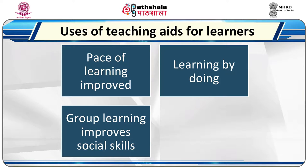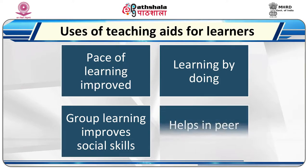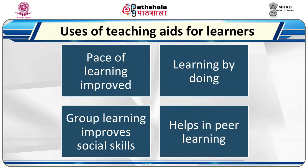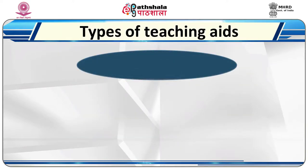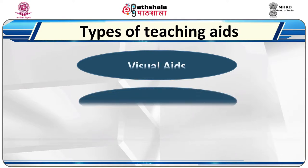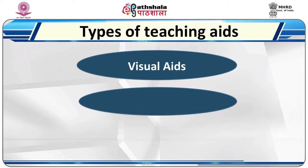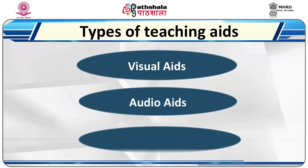Let us now see the prominent types of teaching aids. Visual aids use the sense of vision — actual objects, models, pictures, charts, maps, flashcards, flannel boards, bulletin boards, chalk boards, overhead projectors, slides and so on. Out of these, blackboard and chalk are the commonest ones. Audio aids involve the sense of hearing — musical instruments, radio, tape recorders and so on. Audiovisual aids involve both the sense of vision as well as hearing — such as puppets, television, film projector, film strips and so on.